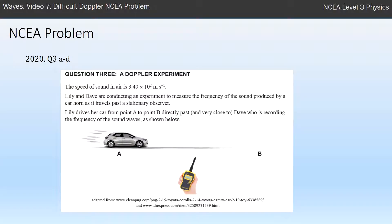Hi, this is Mr McGovern. This is the seventh video in the Intro to Waves series and I'm doing another Doppler problem. I say to my class that the Waves paper is the easiest to pass because it's very predictable what the questions are going to be about. There's always a question on the Doppler effect,